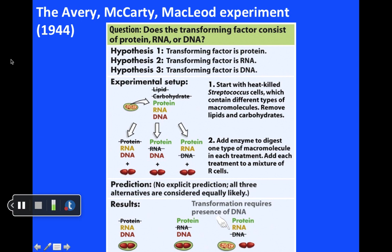Their setup was as follows. They took heat-killed smooth cells and basically separated them into three different batches. In one batch, they added enzymes that destroyed proteins. In another batch, they added enzymes that destroyed RNA. In the third batch, they added enzymes that destroyed the DNA. They then mixed those with living rough cells—the red ones—and looked to see which of these three were able to be transformed by the heat-killed smooth cells.